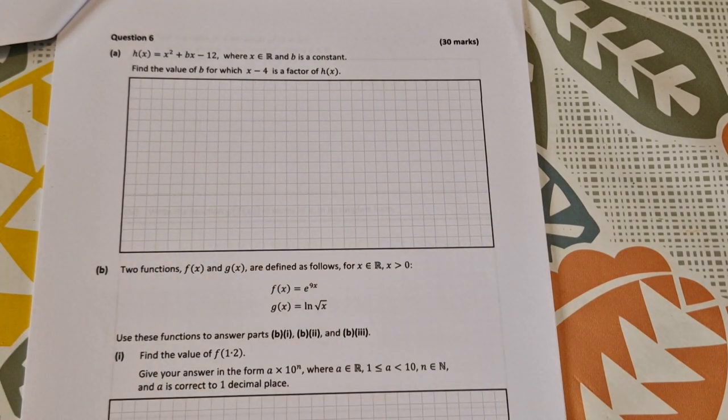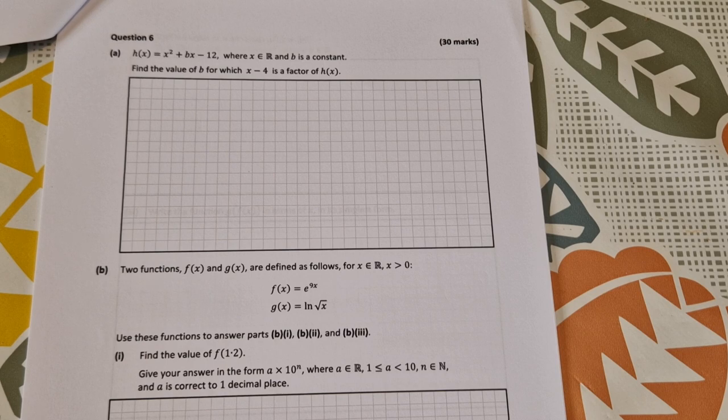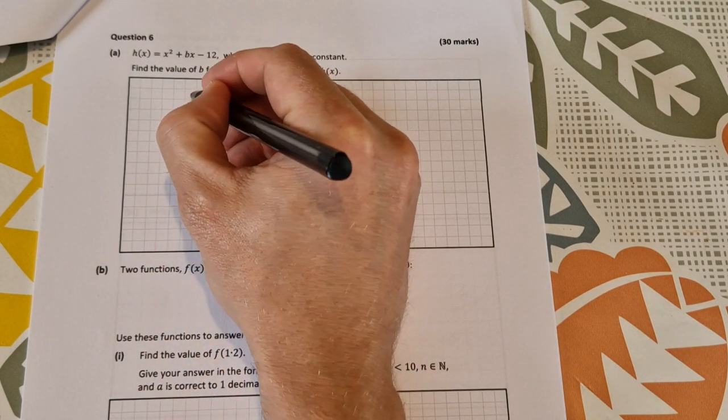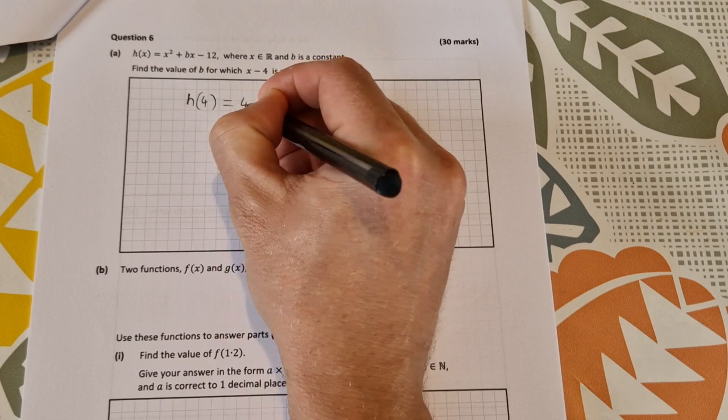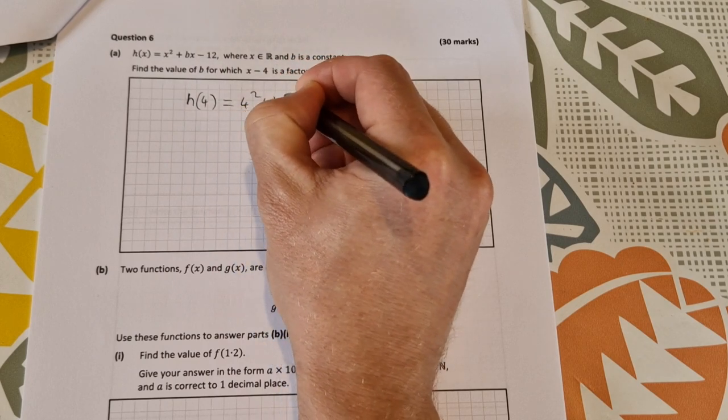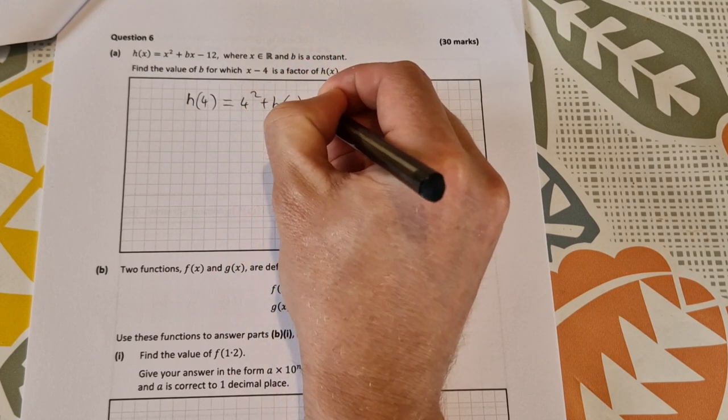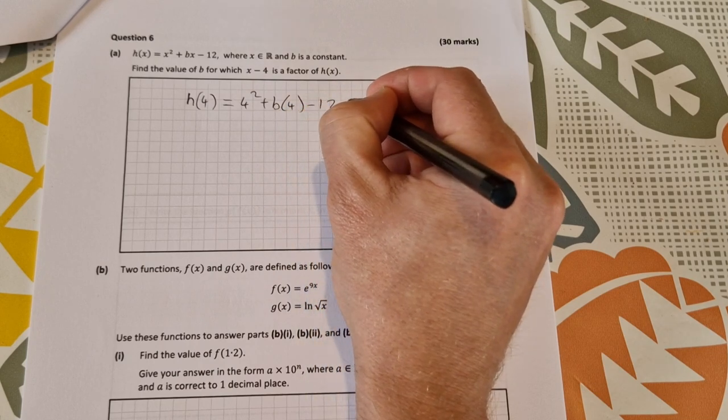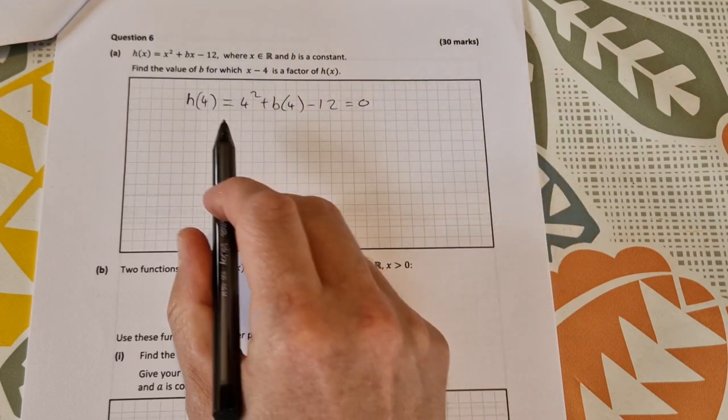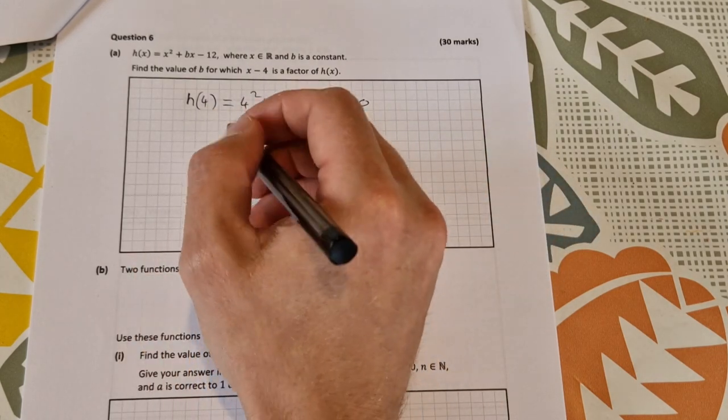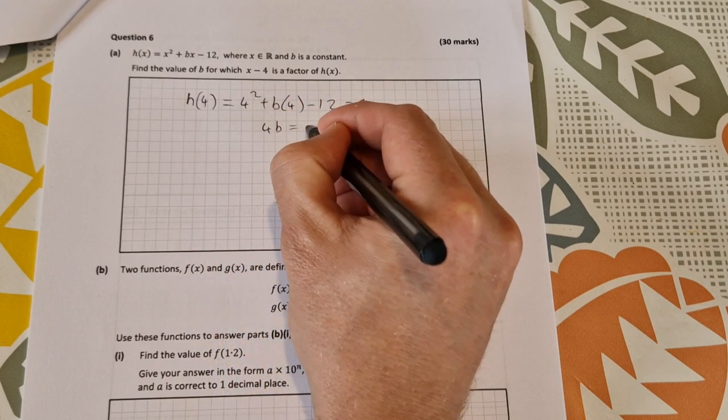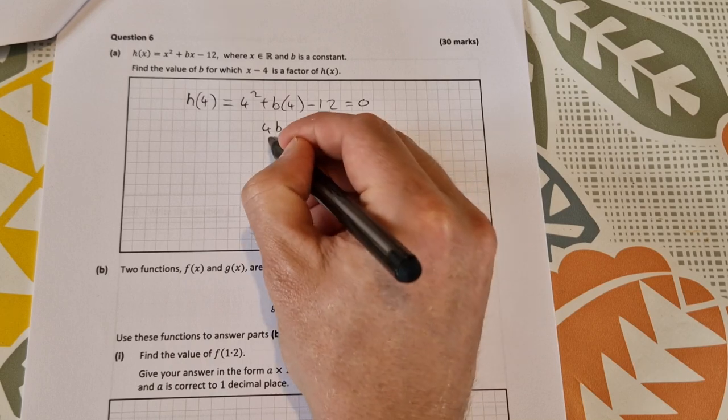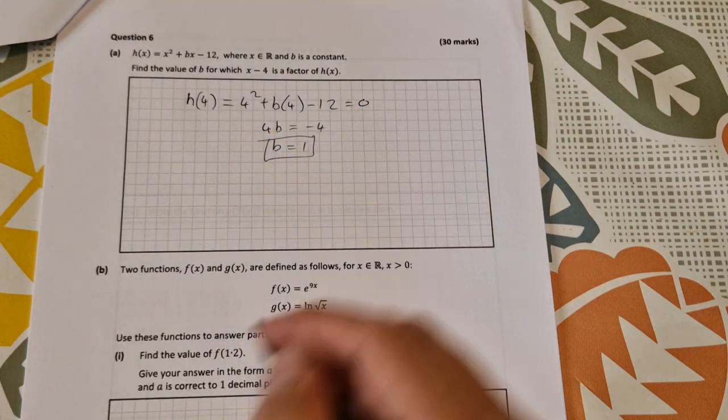There are three different ways you can do this that they accept on the marking scheme. The easiest way in my opinion is just do h(4), which will be 4² + b × 4 - 12, and that would obviously be equal to 0 because it's a factor. So that gives us 4b = -4 and b = -1. Nice and easy to get you going on that question.